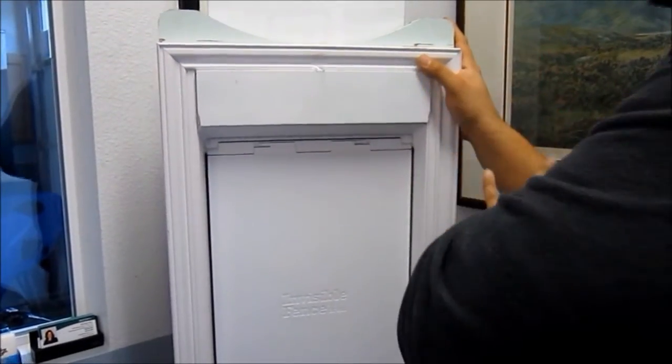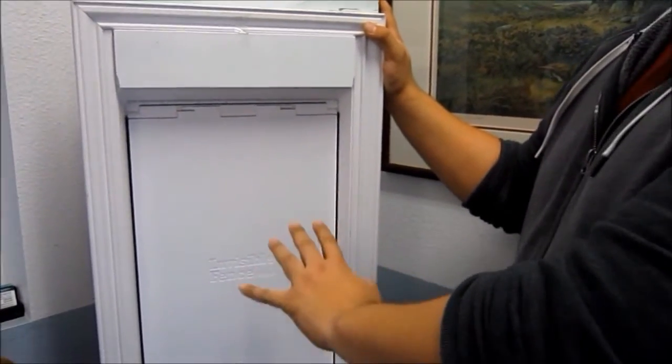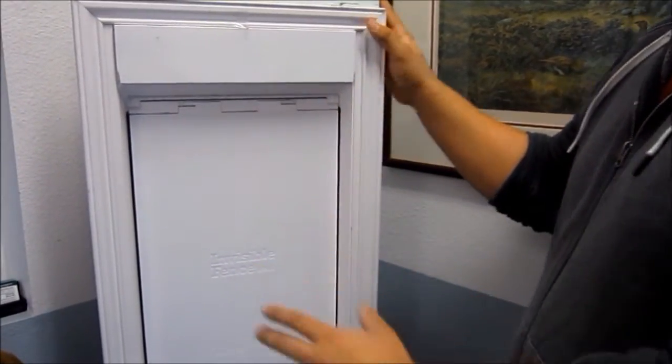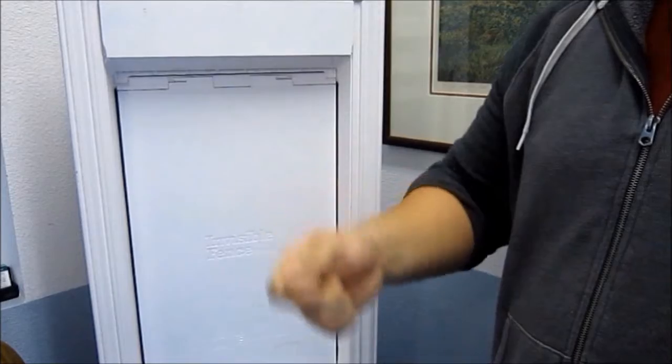Before you do anything with the doorman, test that it will work where you're going to put it. Just set it up with the batteries and program it, get it all ready to go, lean it up against the door that you're going to be placing it in, and test to make sure that it works.